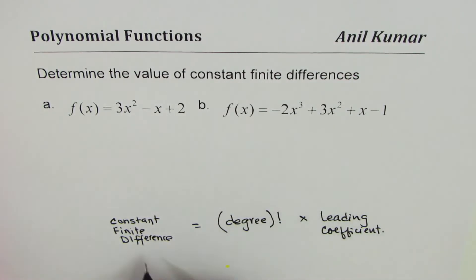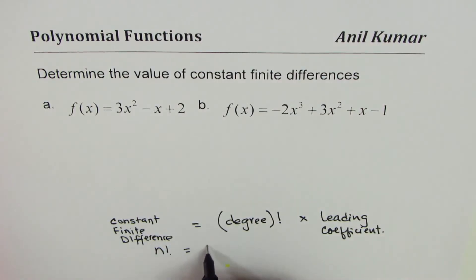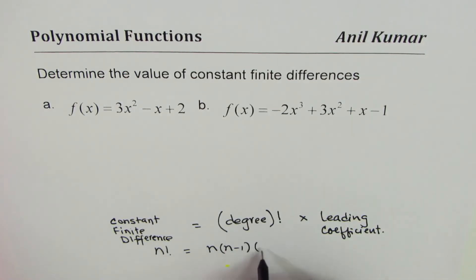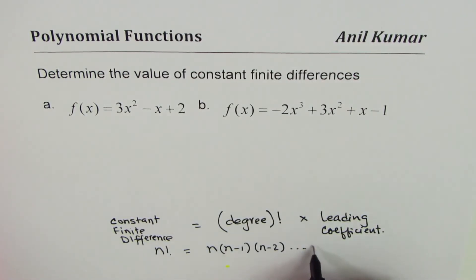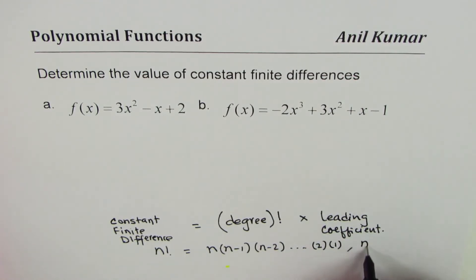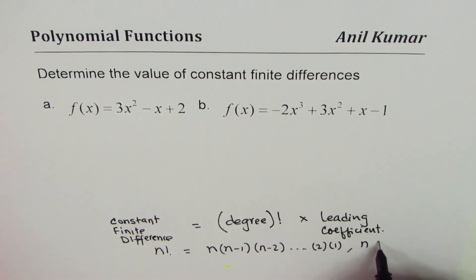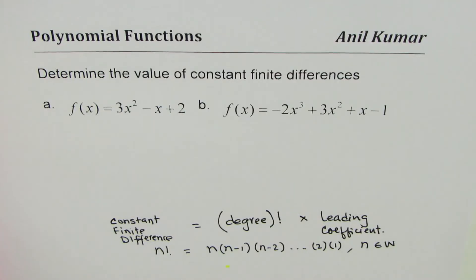Factorial means: if I have n factorial, it means the product of n times (n−1) times (n−2) and so on till 1, where n is a whole number. So n belongs to whole numbers — that's the meaning of factorial.